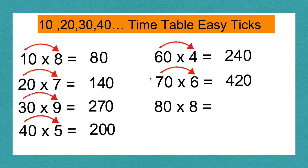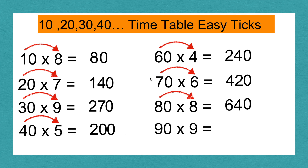80 times 8: 8 times 8 equals 64. Add the 0, and 80 times 8 equals 640. 90 times 9: 9 times 9 equals 81. Add the 0, and 90 times 9 equals 810.